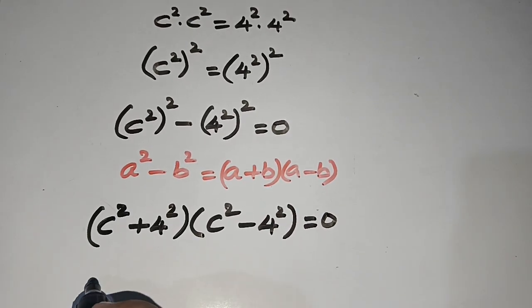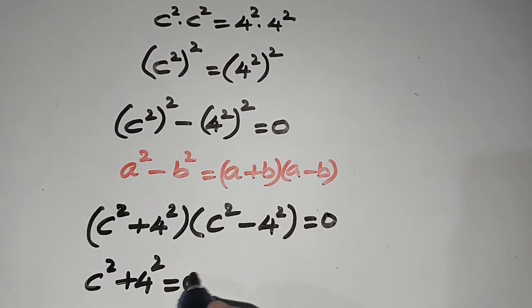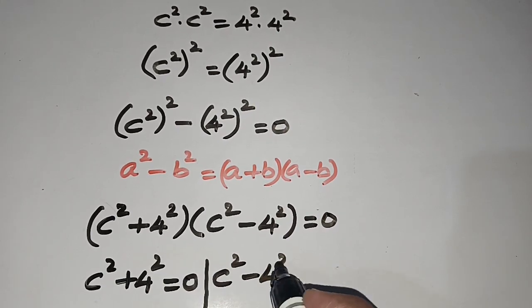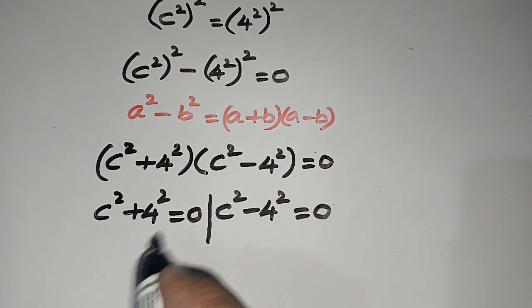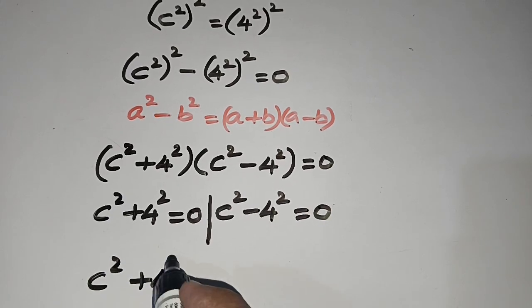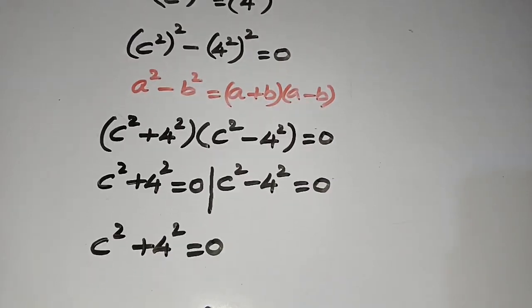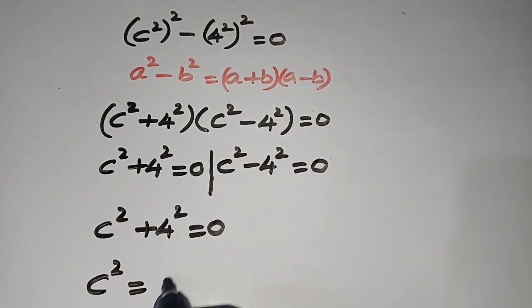So we have c² + 4² = 0 or c² - 4² = 0. If c² + 4² = 0, then c² = -4².